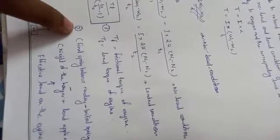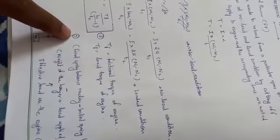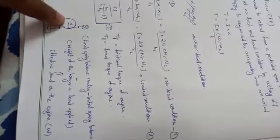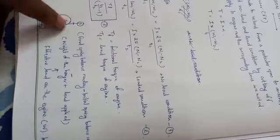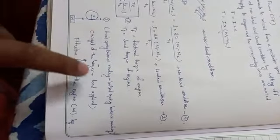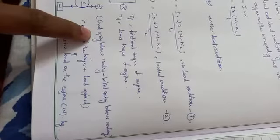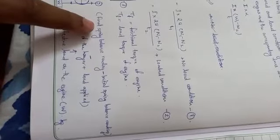To calculate the load torque, we use the brake drum setup, which has a spring balance reading and the applied load. Depending on the direction of engine rotation, either reading will be higher. In our case, the spring balance reading is higher. The net tension is (S − W) × g × r, which gives the load torque, where r is the brake drum radius.